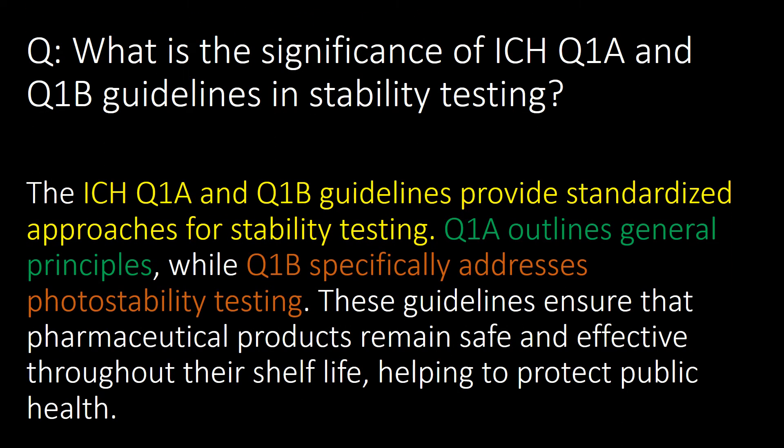What is the significance of ICH Q1A and ICH Q1B guidelines in stability testing? The ICH Q1A and Q1B guidelines provide standardized approaches for stability testing. Q1A outlines general principles while Q1B specifically addresses photostability testing. These guidelines ensure that pharmaceutical products remain safe and effective throughout their shelf life, helping to protect public health.